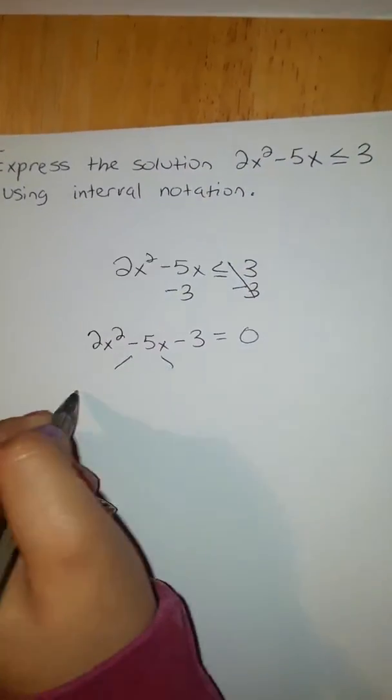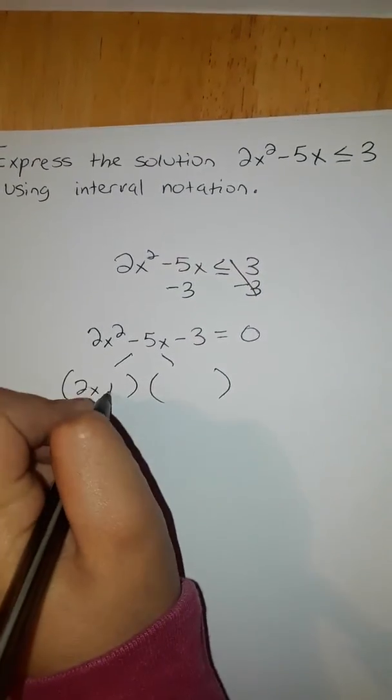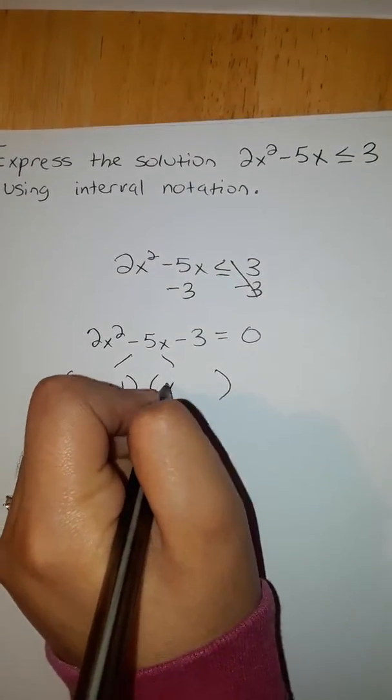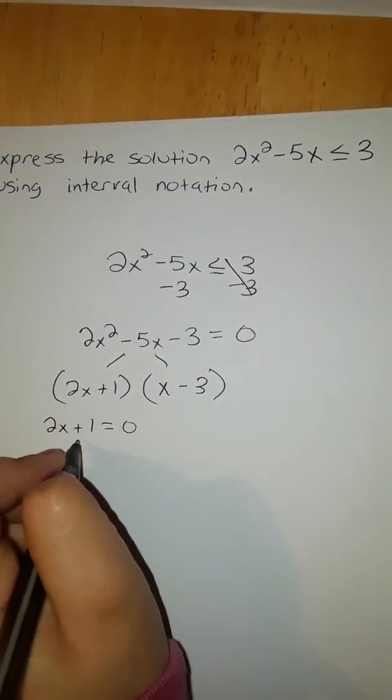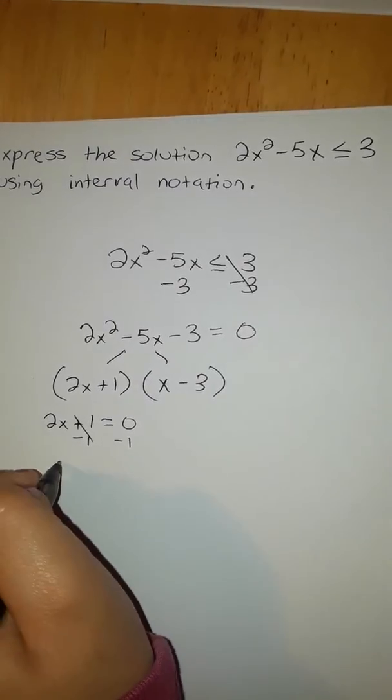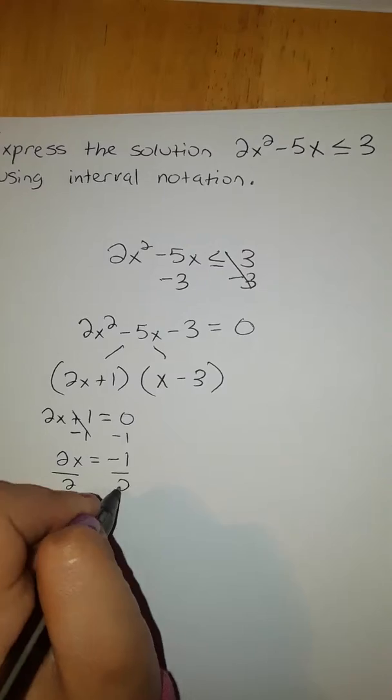Now we're going to factor this. It factors out into 2x plus 1 and x minus 3. We're going to set 2x plus 1 is equal to 0. Subtract 1, you get 2x equals negative 1. Divided by 2, we get that x is equal to negative 1 half.